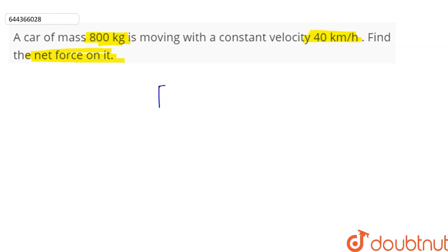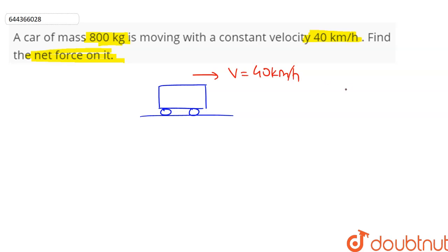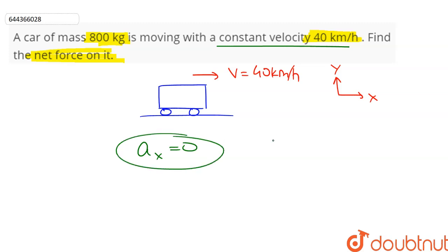So if we have a car moving over the ground in this direction with a constant velocity of 40 kilometers per hour, let this be the x-direction and the vertical direction be the y-direction. In the x-direction, since the velocity is constant, that means acceleration in the x-direction is equal to zero. Therefore, the net force in the x-direction will be zero.